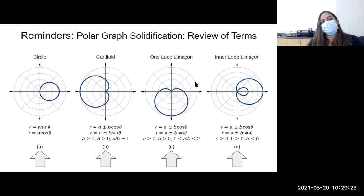We also studied on Thursday limaçons. We had one loop limaçons where you didn't have a little curly loop in there. That's, again, just like a cardioid, the same format: A plus or minus B cosine theta, A plus or minus B sine theta. A is positive, B is positive, and the ratio of A and B is somewhere between one and two.